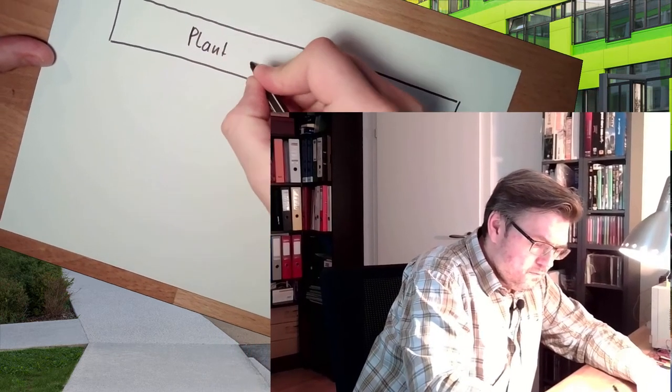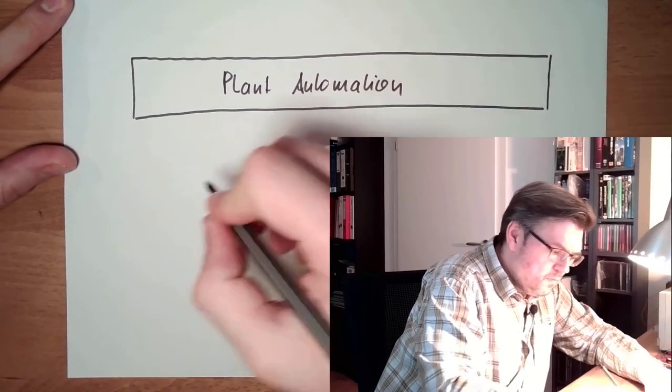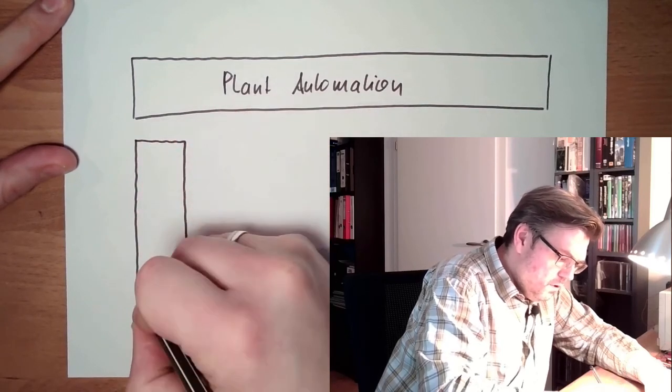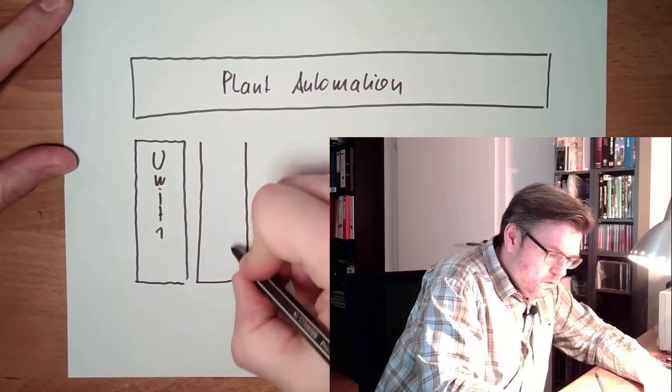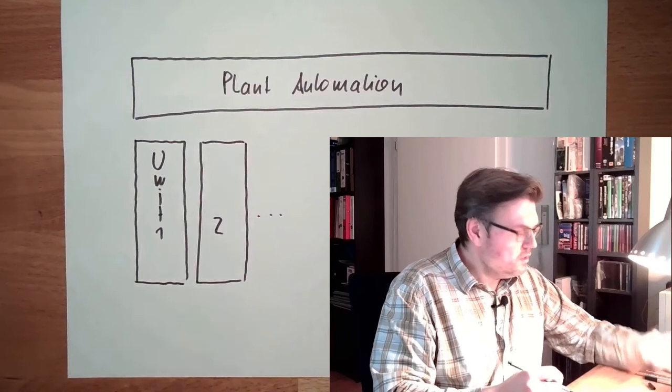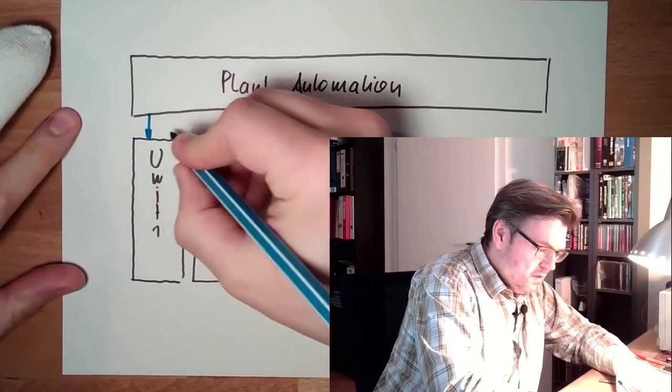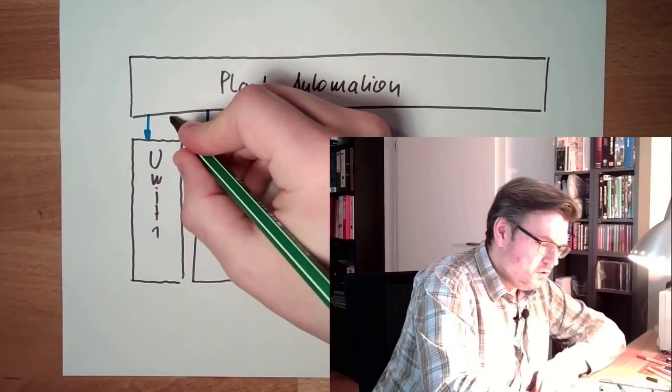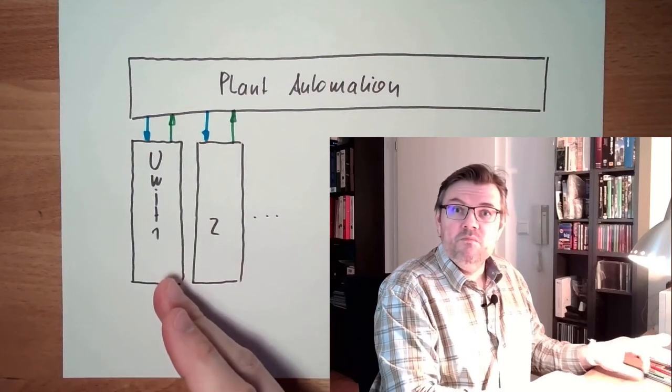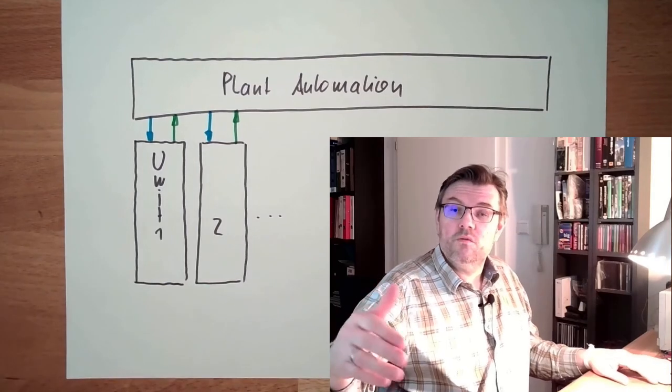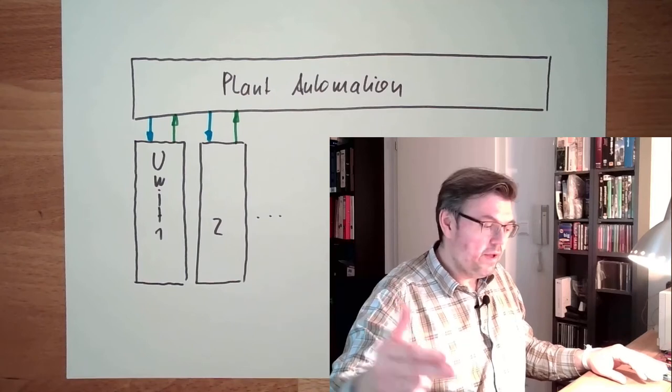So, let's say here is the plant automation. And here are the different units. The plant automation needs to give commands and get results to the unit. Start and stop commands. There are set point commands. Go to a higher load. Select the regime. Maybe the unit is in flow control, that we can process that many cubic meters per second. This would be a run-of-river power plant or it's in power control.